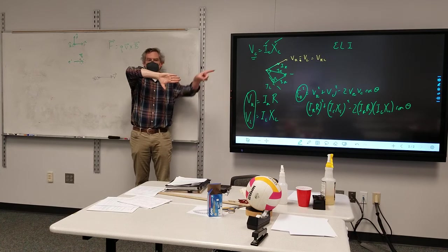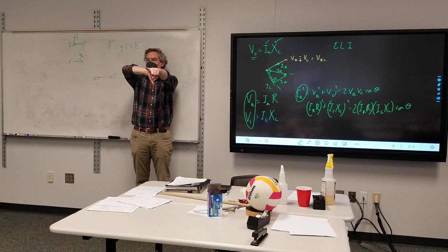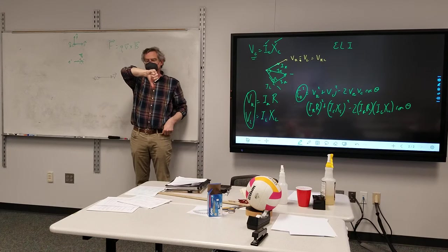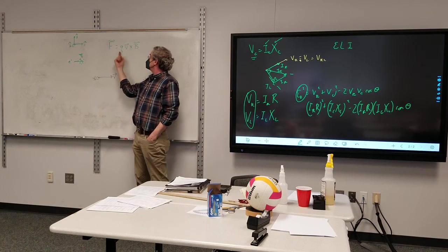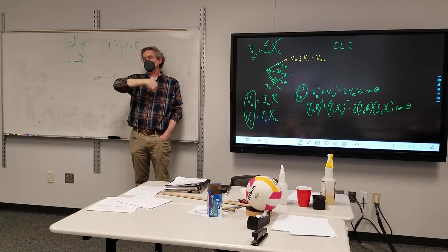So V is this way. My fingers curl towards V, which is that way. So the cross product is downwards. But since the charge is negative, it's the opposite direction.